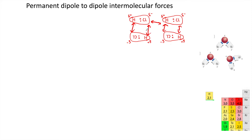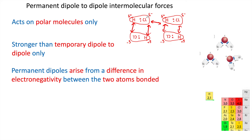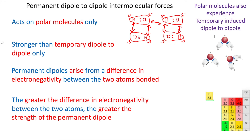With these polar molecules, the negative part is attracted to the positive, and the positive part is attracted to the negative. These permanent dipole-to-dipole intermolecular forces are stronger than the temporary dipole-to-dipole forces. They act on all polar molecules, and permanent dipoles arise from a difference in electronegativity between the two bonded atoms. The greater the difference in electronegativity, the greater the strength of the permanent dipole-to-dipole force. Remember, polar molecules experience both permanent dipole-to-dipole and temporary induced dipole-to-dipole forces, as all molecules experience the latter.